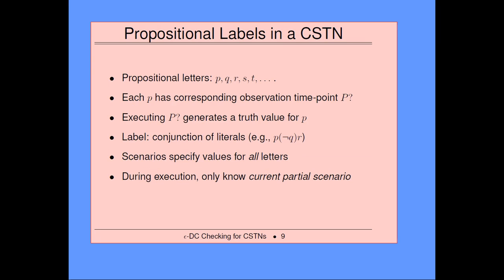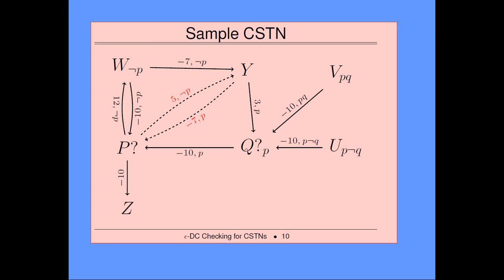A little more detail on notation: we have propositional letters P, Q, R, S, T that take on Boolean values. Each P has a corresponding observation time point, notated as capital P question mark. Executing P-question-mark generates a truth value for P, either true or false. You then get compositional labels on the time points and constraints. During execution, you only know the observations you've seen so far — you may know the value of P and Q, but not R, S, and T. Here's an example of a CSTN.